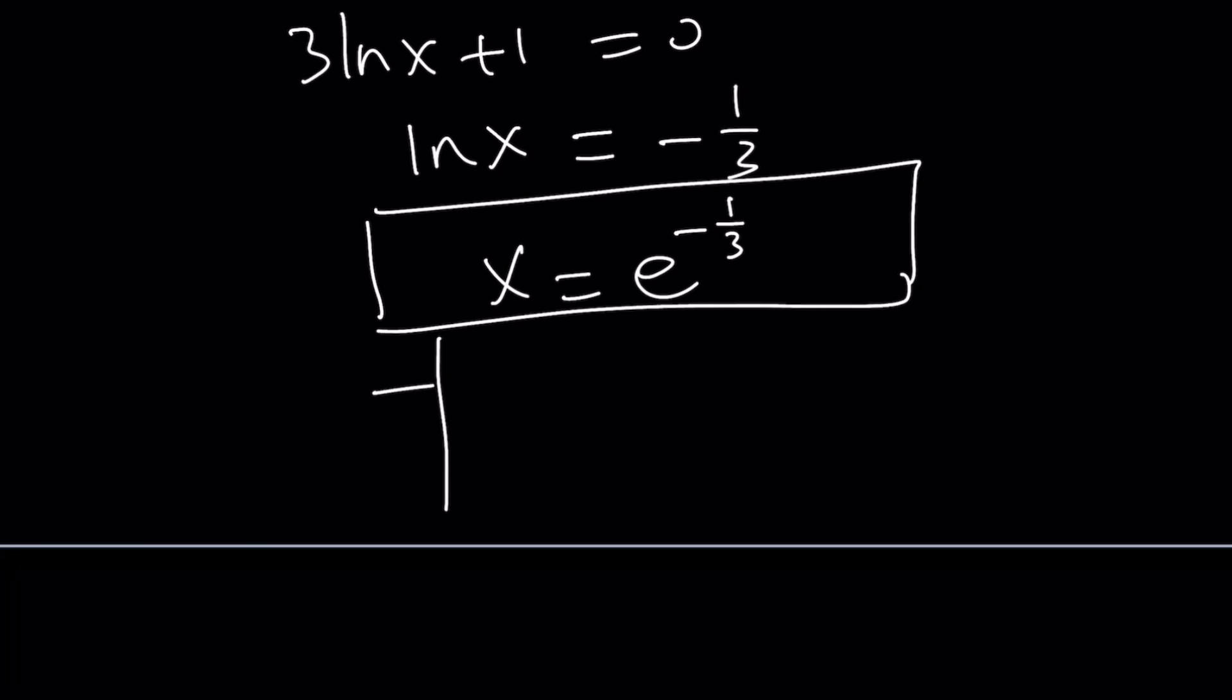So we're going to make a table like this: x, f prime, and f. The critical value is e to the power of negative 1 third right here. So we have the x row, we have the f prime row, and then we have the f row. So here we have e to the power of negative 1 third, which is where the derivative changes sign.